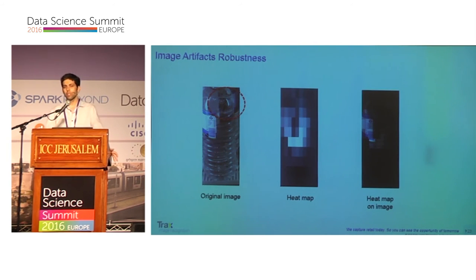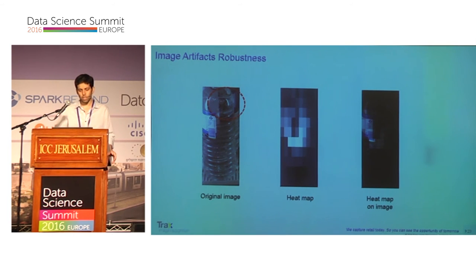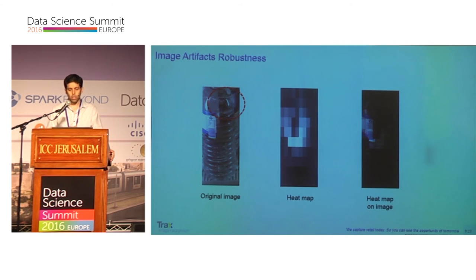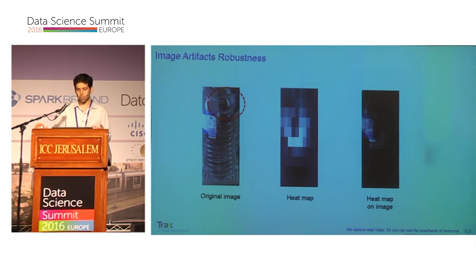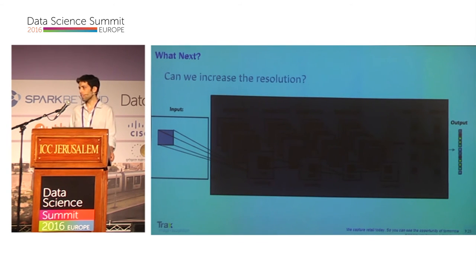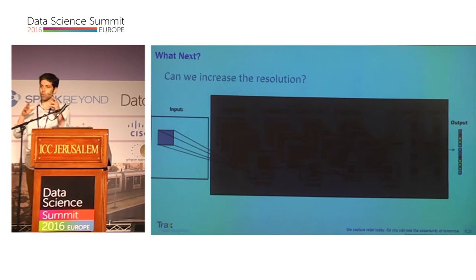Now I'll show how we use this method to check the robustness of our network for image artifacts — in this case, reflection. In the original image, there is a reflection of an additional product inside our product. Our concern was that this reflection might affect network performance. But looking at the heat map, the network managed to ignore this artifact and found only the label as the significant part. An additional reason for misclassification might be the robustness of your network to image artifacts.